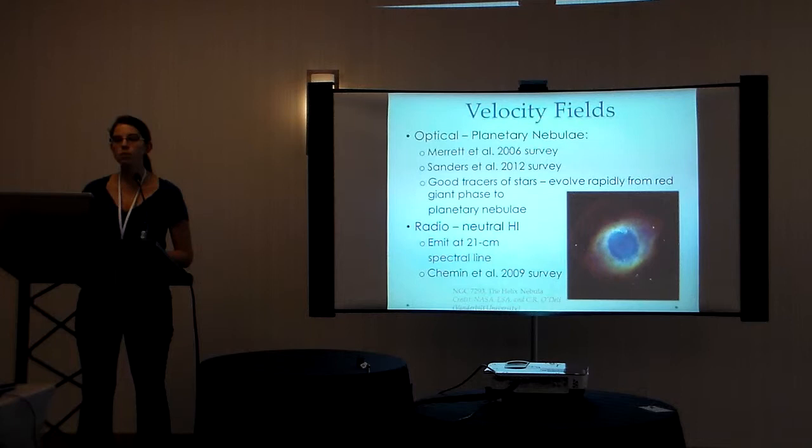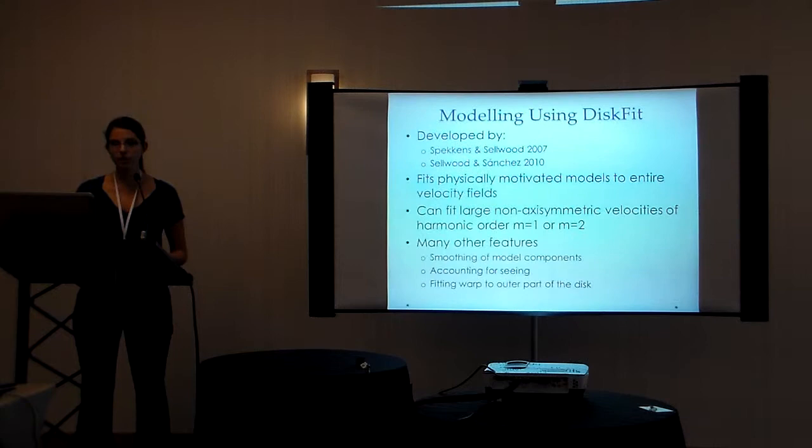To develop our gaseous rotation curve, we used a velocity field from the Chemin et al. 2009 survey, which looked at emission at the 21-centimeter spectral line of neutral hydrogen.